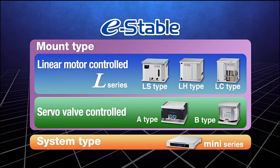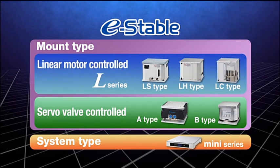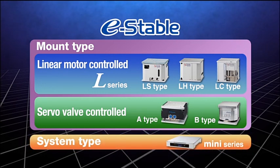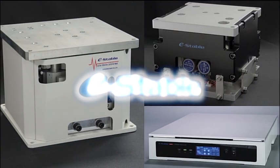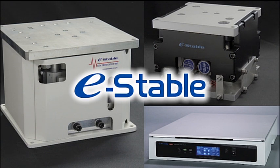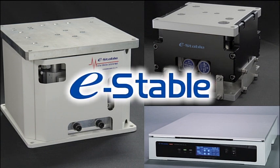The active vibration isolation system e-stable has a wide variety of models, including the linear motor controlled L series, servo valve controlled series, and e-stable mini, each suitable for different uses. Kurashiki Kako's active vibration isolation system e-stable can provide excellent vibration isolation performance without any resonance zones.